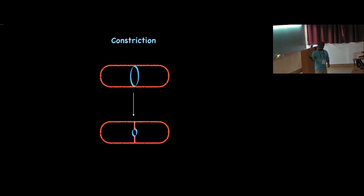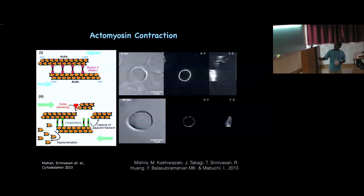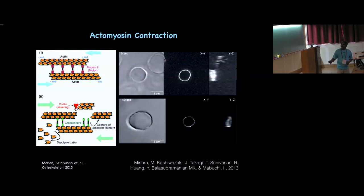So once you have assembled a ring-like structure, what you need to do is form the septum — basically constrict and invaginate the membrane. The most famous mechanism is the actomyosin purse-string model: myosin 2 motor bundles anti-parallel actin filaments, and as myosin walks along the plus ends it pulls the anti-parallel actin toward each other. Actin depolymerization and factors like cofilin also play an important role there.